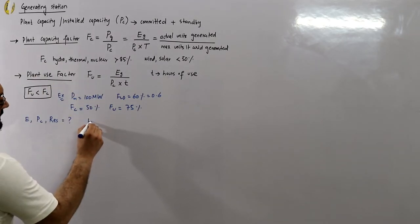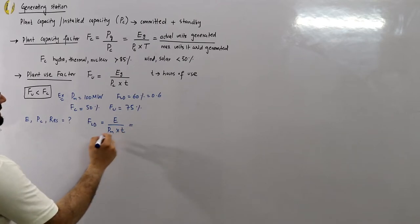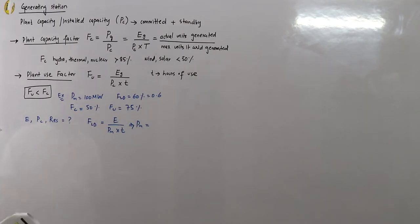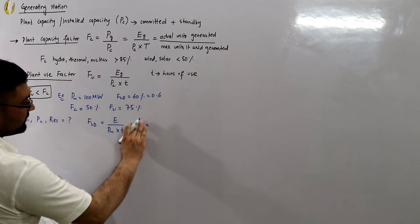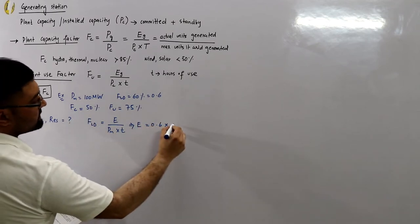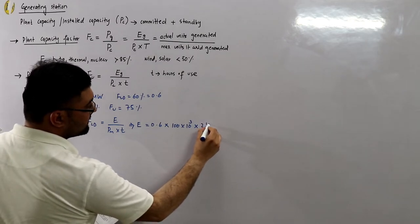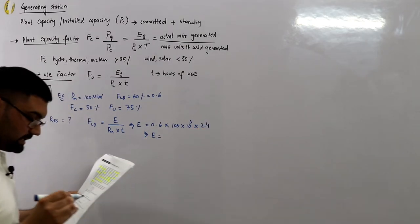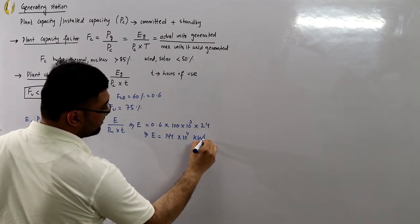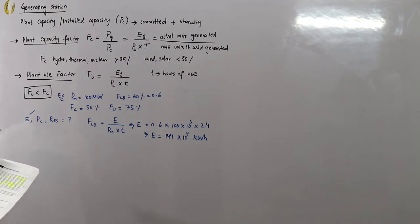From the load factor definition, FLD equals E divided by PM times T. So we can calculate energy E as: E equals 0.6 multiplied by the maximum demand of 100 megawatts (100 × 10³ kW) multiplied by 24 hours. The daily energy produced comes out to be 144 × 10⁴ kilowatt-hours.